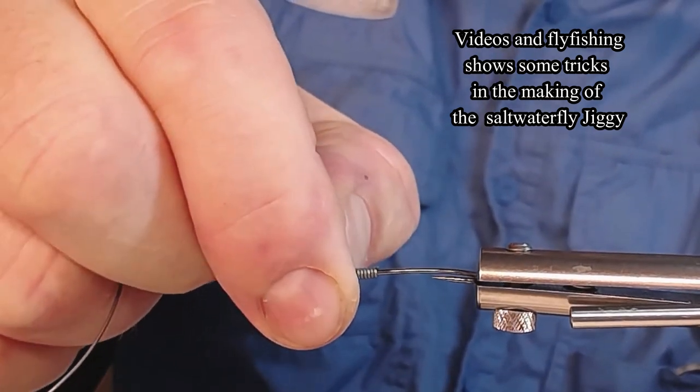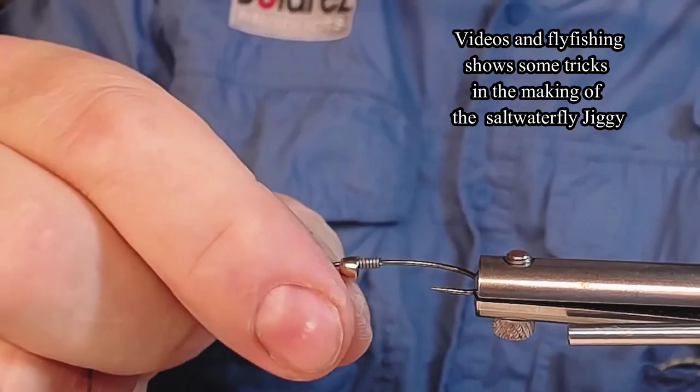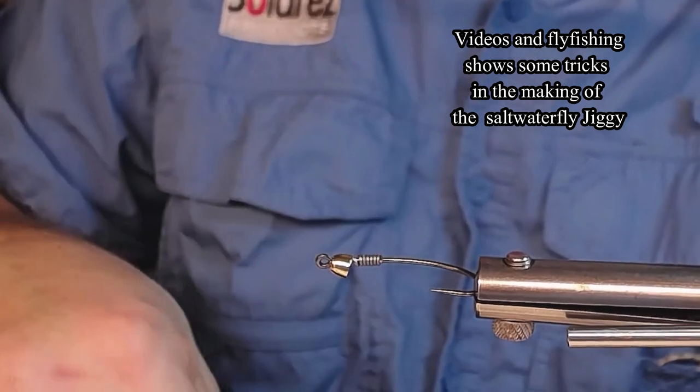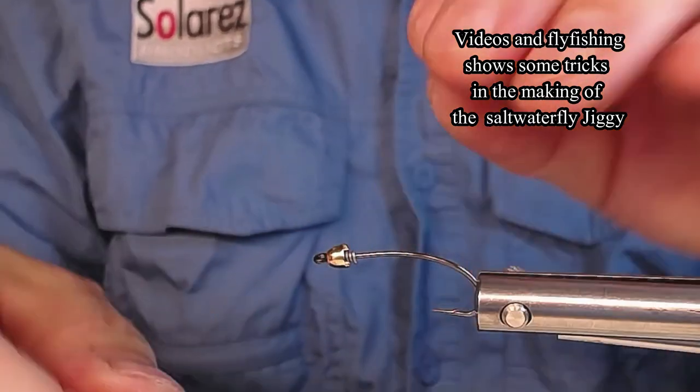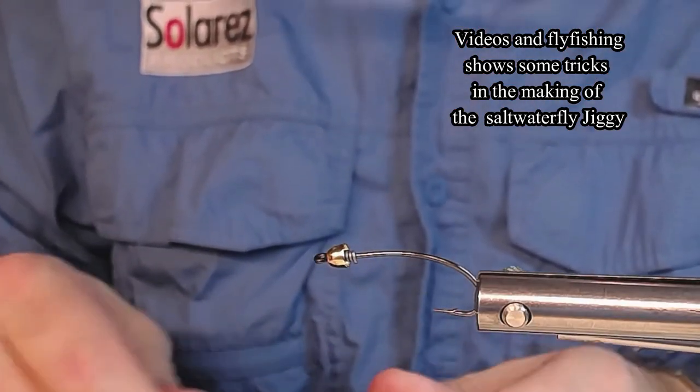Pull it up, pull it out like that, and just push it into the cone. I'm going to repeat it with another hook because I'm making a lot of these flies today.